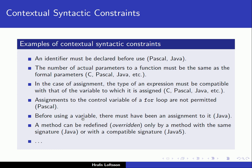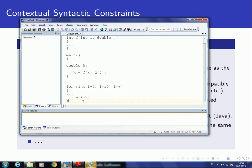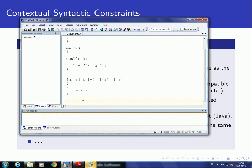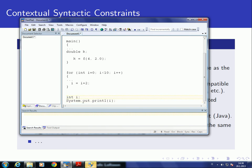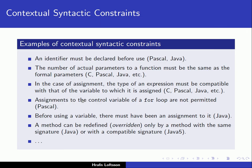A fifth example: before using a variable, there must have been an assignment to it. In Java, if we have a declaration like int i, and then we say System.out.println(i), the Java compiler will complain because i does not have any value. This is one more example of a contextual syntactic constraint.